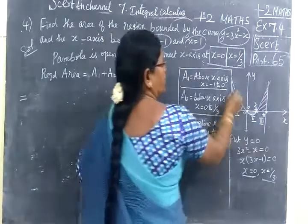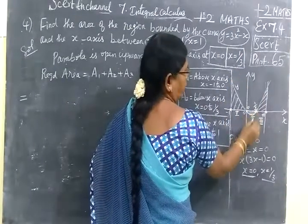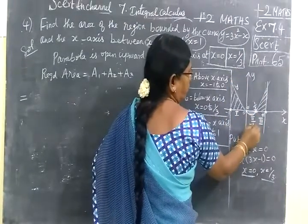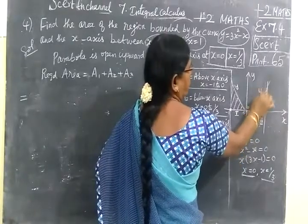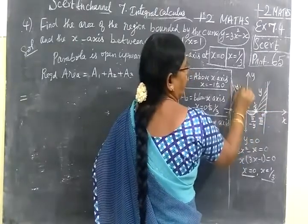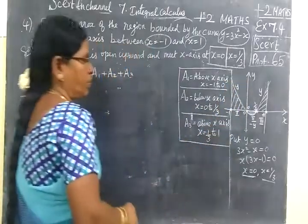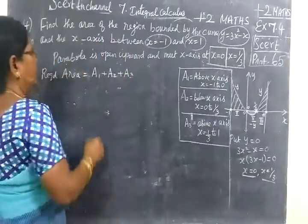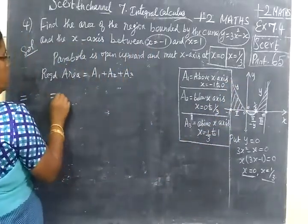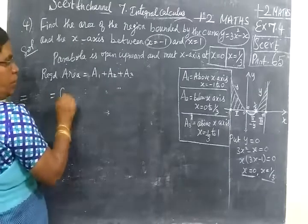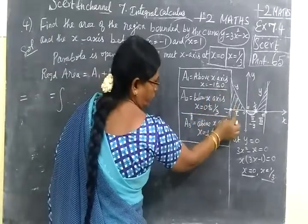Above the x-axis is plus y, and below the x-axis is minus y. Again above the x-axis is plus y. So for A1, A2, A3 — the first area has limit minus 1 to 0.